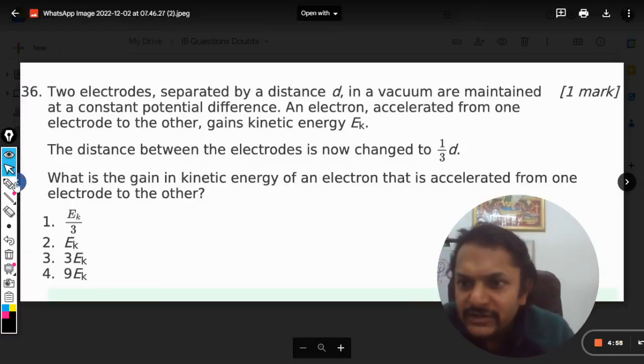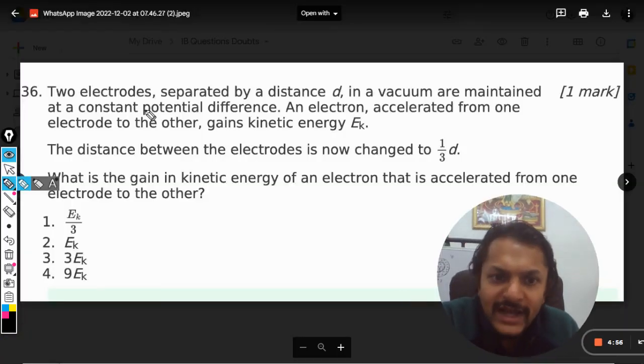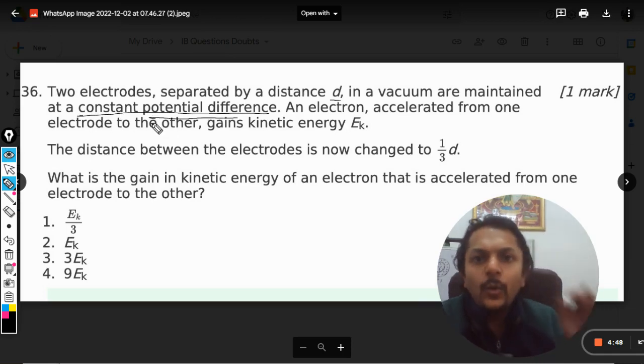Okay dear students, let us see what is there in this question. Two electrodes separated by a distance d in a vacuum are maintained at constant potential difference. Now what does this mean? This means that there are two